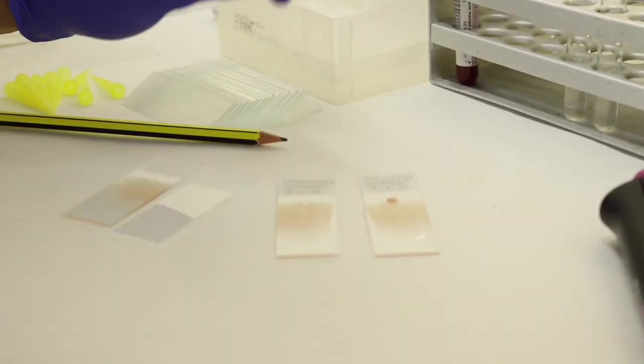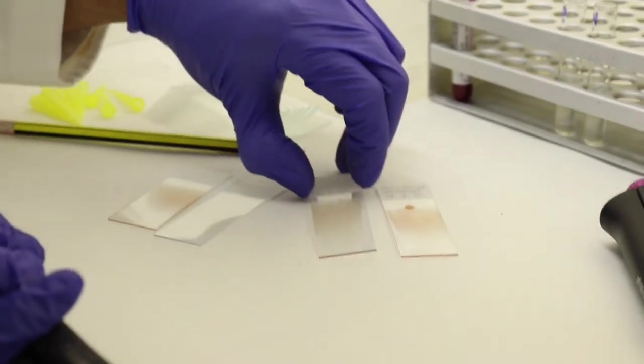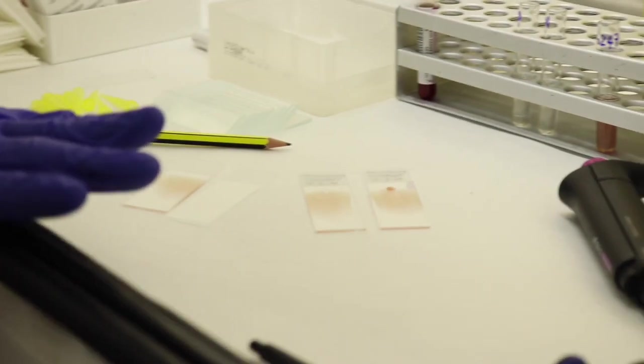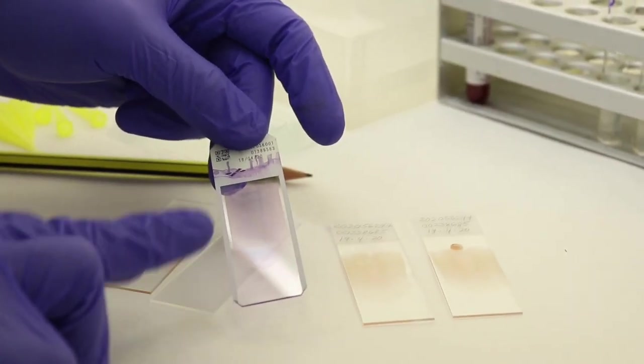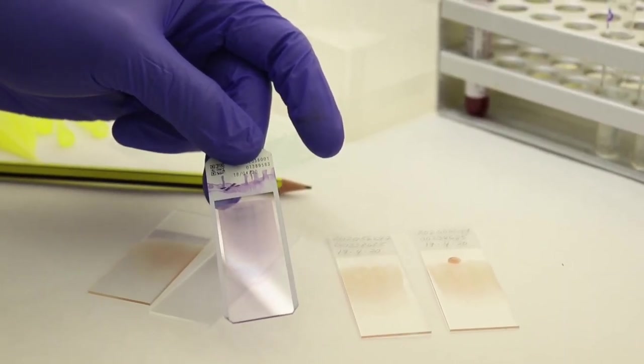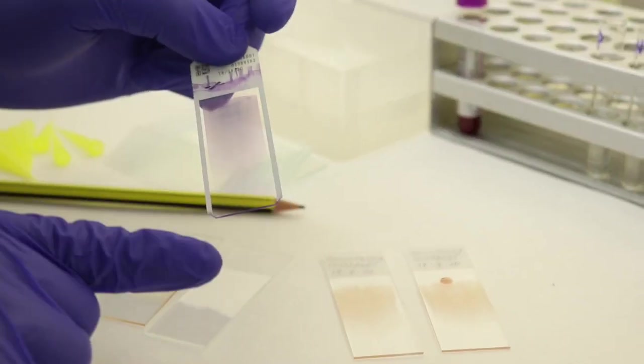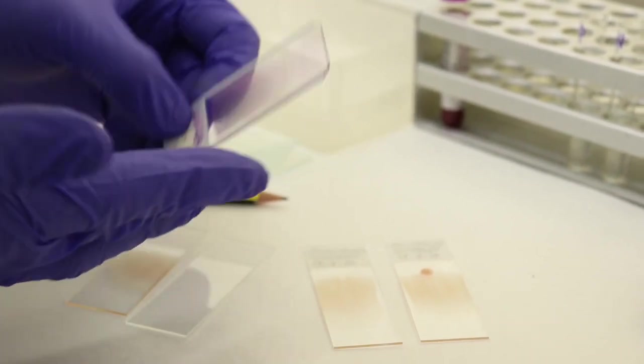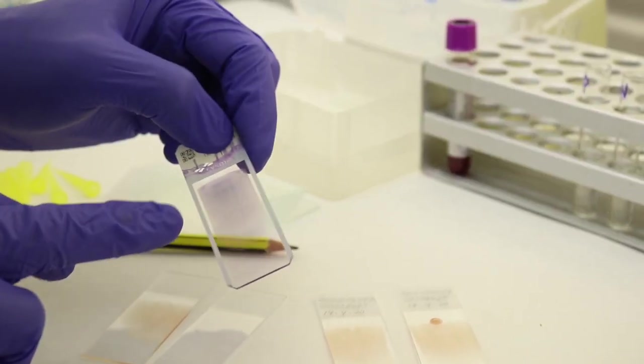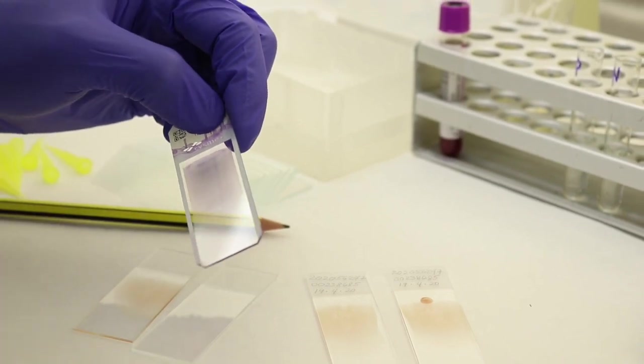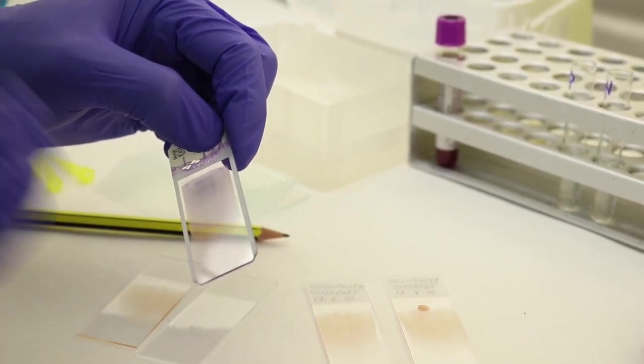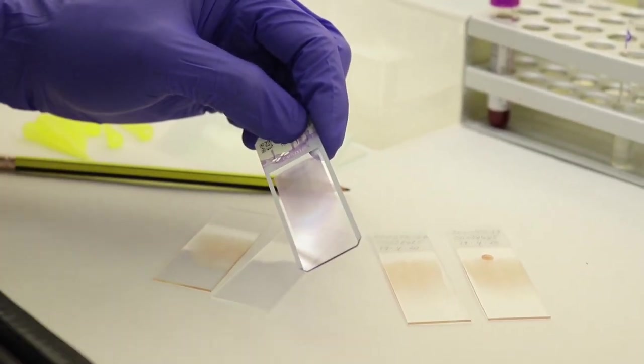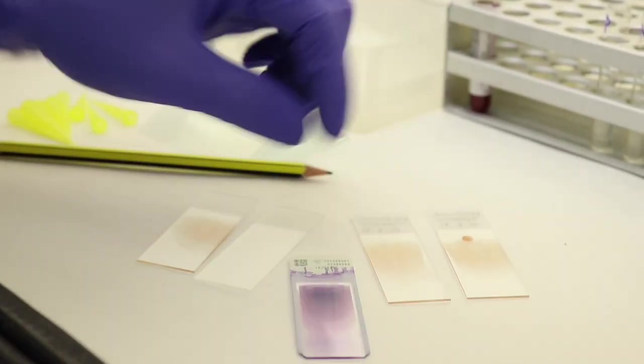To give you the final end product, this is how a blood film looks after staining. This is done automatically because we have two kinds of blood smear preparation—manual and automatic. This is now ready for examination under the microscope.